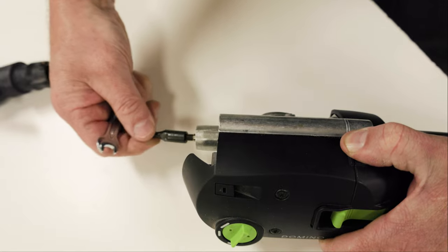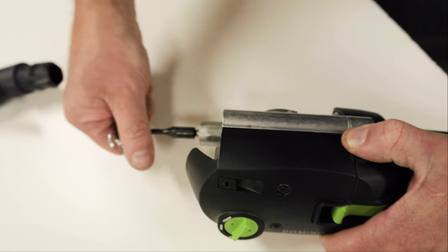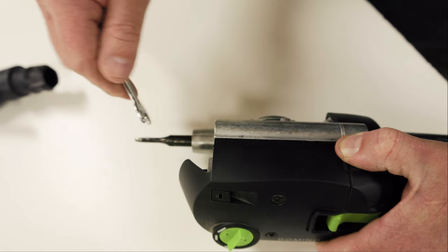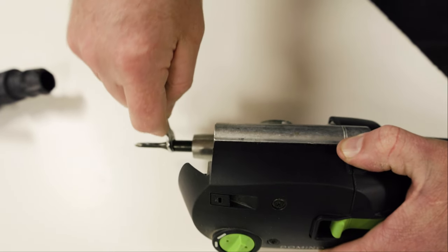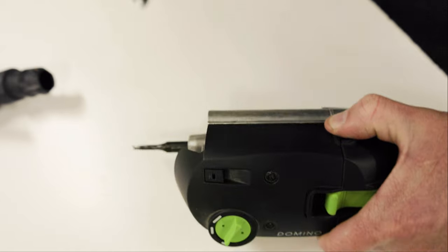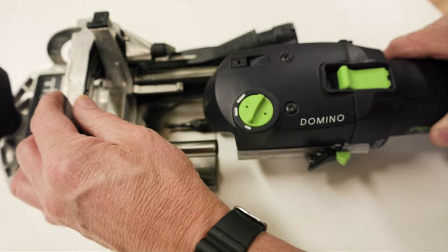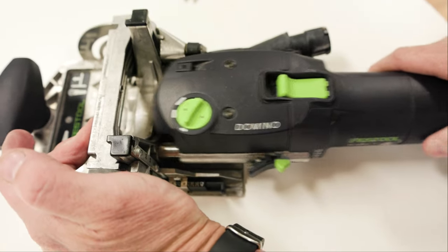Insert the new mortising bit and start the thread by hand to avoid any cross threading. Press in on the spindle lock while tightening the bit. Do not over tighten the bit. Carefully reinstall the fence body onto the motor housing and push the fence body in until the latch clicks.